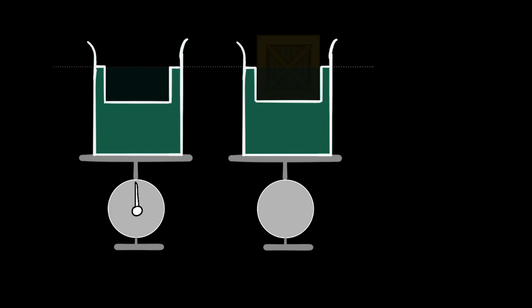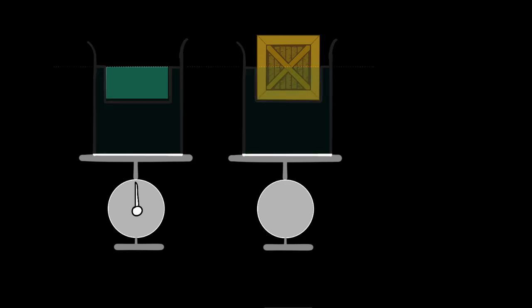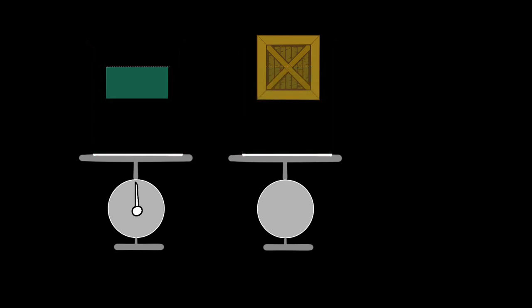Which means any difference in the weight must come from the top part. Therefore, I just have to concentrate on the top part. So if this weighs more than this, then this whole thing would weigh more. Otherwise, this would weigh more. If the two weigh the same, then the two will weigh the same. So the question now is: which of these two weigh more?